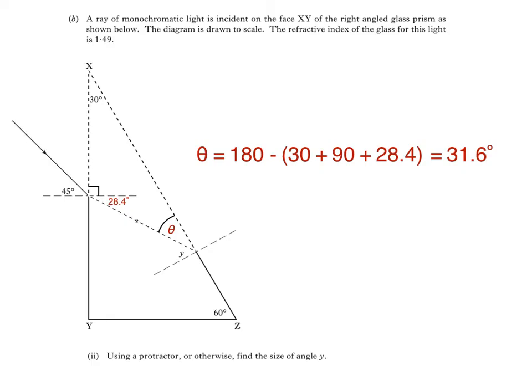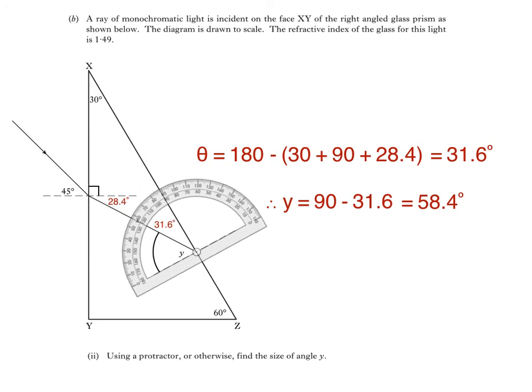Since the normal is drawn at 90 degrees to the surface, it follows that angle Y is equal to 90 minus 31.6, which equals 58.4 degrees. Of course, in this question, we were also given the option of using a protractor to measure angle Y, although that's not always the case.